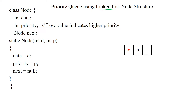I used the singly linked list. The singly linked list structure is represented here. Each node has a data field, a priority field, and a third field which is the address to the next node. So for this we have to create the class node with the variable data.